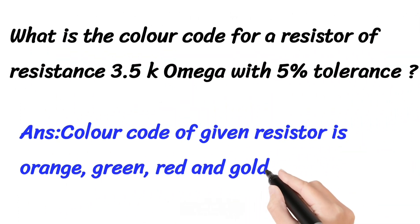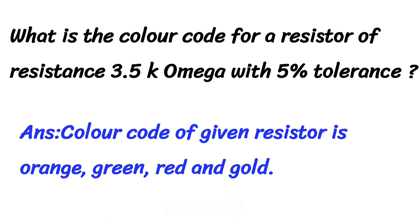The next type of question gives the value and asks for the colors. For example, 3.5 kΩ means 3.5 × 1000, plus or minus 5%. Here, 3 represents orange, 5 represents green, the multiplier 10 power 2 represents red, and plus or minus 5% represents gold. So the answer is orange, green, red, and gold.